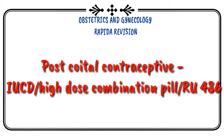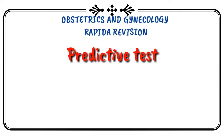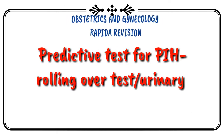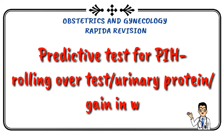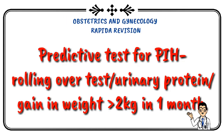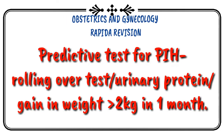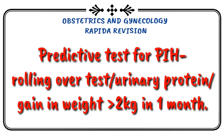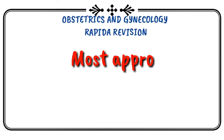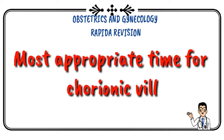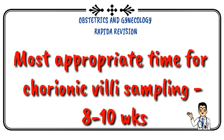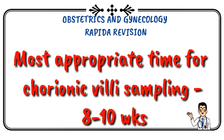RU-486 is a contraceptive. Predictive tests for pregnancy-induced hypertension include roll-over test and urinary protein. Weight gain of 2 kg within 1 month is a warning sign. Most appropriate time for chorionic villus sampling is 8 to 10 weeks.